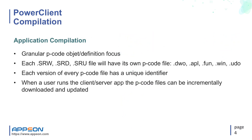Traditionally, when you compile a PowerBuilder application using P-code, PowerBuilder builds PowerBuilder dynamic libraries — PBD files. The PBD files contain everything, such as visual objects, data windows, data stores, PowerScript code, and embedded SQL. All the PBD files must be installed to the desktop and work together to get the application running.